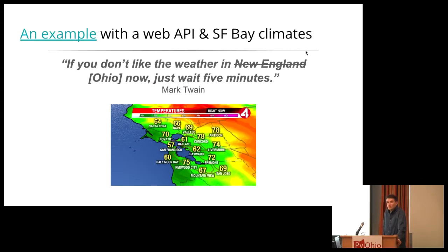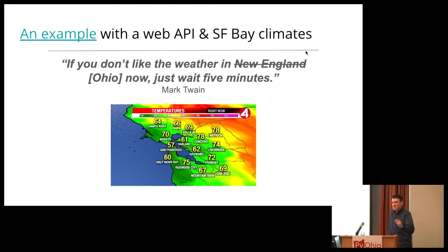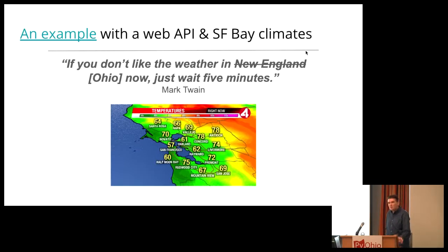At that point we know enough about using Reticulate to work through an example. How many people have heard this phrase before: "If you don't like the weather in Ohio — or insert a state where you live — just wait five minutes"? I've heard this a lot growing up in Ohio. I recently moved to San Francisco, and we have our own version: instead of waiting five minutes, it's simply driving five minutes, because of the mountainous terrain.